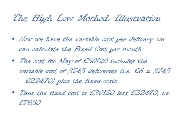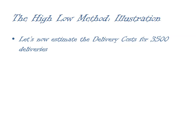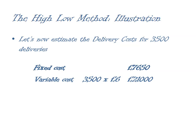Now I can estimate the cost of 3,500 deliveries. We'll incur a fixed cost, which we've calculated at £7,650. We'll also incur a variable cost based on £6 per delivery, so for 3,500 deliveries our variable cost will be £21,000. Adding those two figures together gives us a total cost of £28,650.